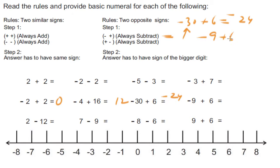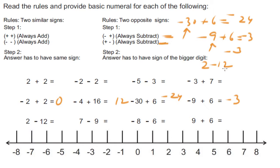Negative nine plus six: we subtract. Nine minus six is three, and nine is the bigger digit, so the answer is negative three. Two minus twelve — positive two minus twelve — two opposite signs, we subtract. Twelve minus two is equal to ten, and twelve is the bigger digit, so this is negative ten. Two minus twelve is negative ten.